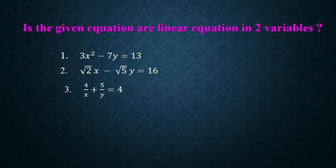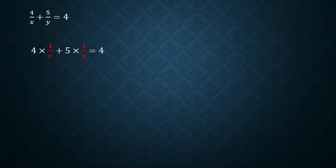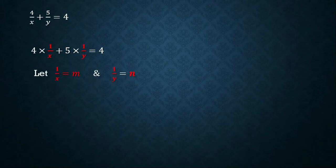Third: 4/x + y/y = 4. We split this as 4 × (1/x) + 5 × (1/y) = 4. Now we substitute 1/x = m and 1/y = n. So the equation becomes 4m + 5n = 4, which is a linear equation in two variables.